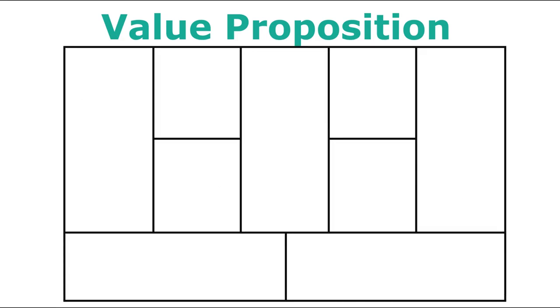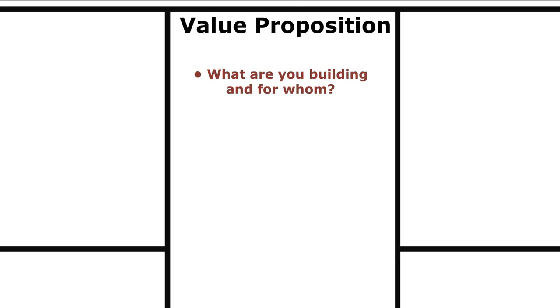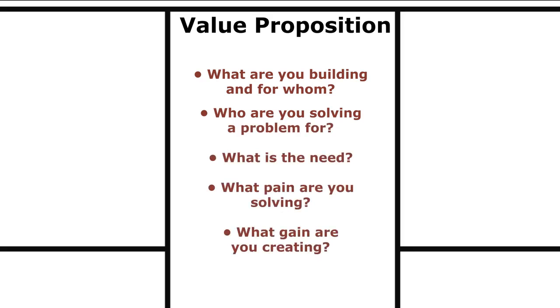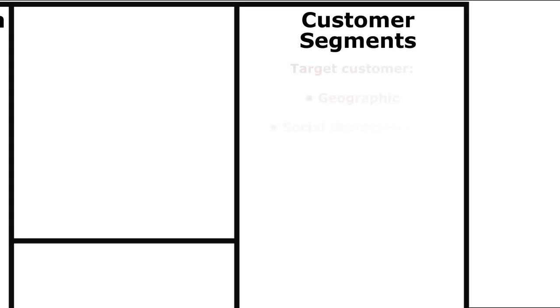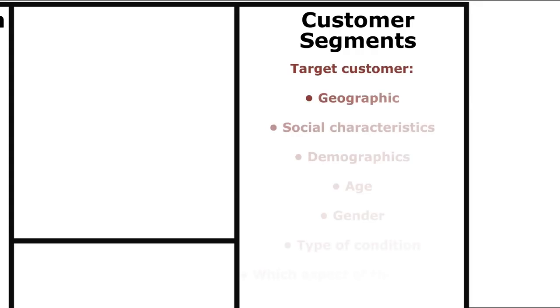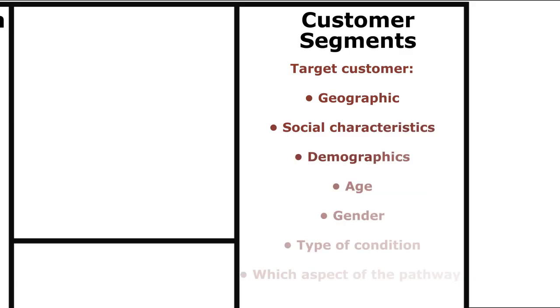What is a business model? Let's take a look at these nine boxes which describe what is needed for an effective business case. The value proposition answers the question: what are you building and for who? It's about solving a problem or need for a customer — understanding what pains you're solving and what gains you're creating. Next: who are my customers? You need to describe all of their geographic and social characteristics — demographics, age, gender, type of condition, and which part of the care pathway you're focusing on.